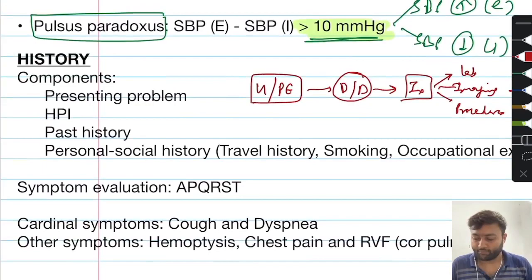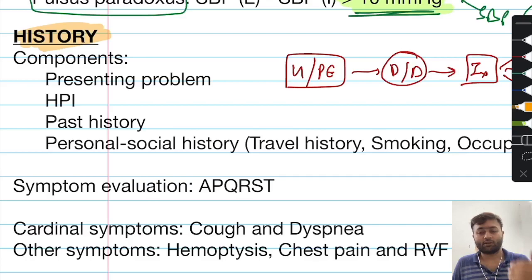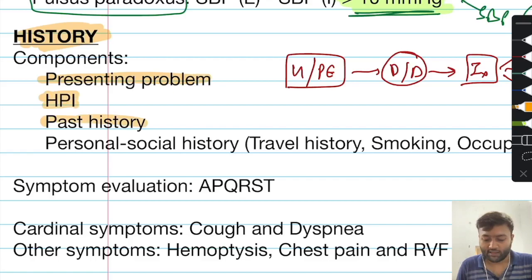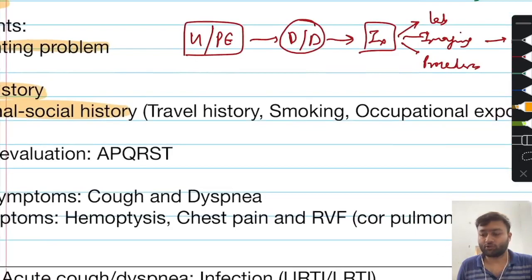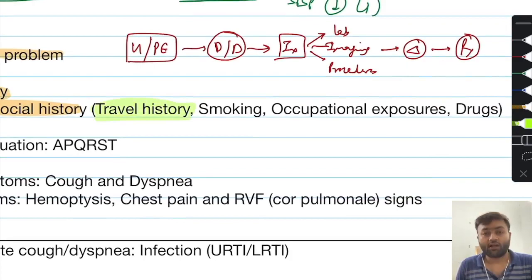The first component in any patient evaluation is always history. History has some basic components, and these are the same when taking a history from a patient suspected to have respiratory disease. You should focus on the presenting problems, the history of the presenting illness, the past history, and also the personal and social history, which are important in pulmonary diseases.